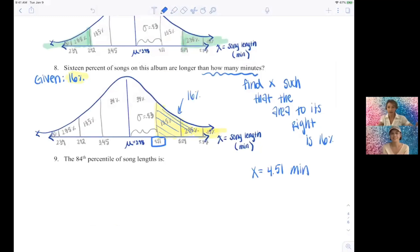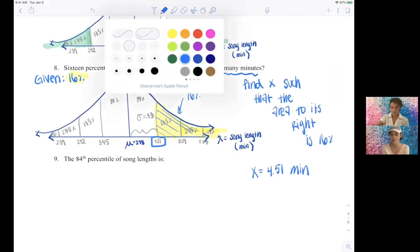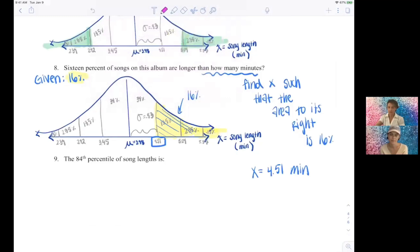Okay, so the 84th percentile means I want to know what's the boundary such that 84 of the data is to the left. Okay, so we start in from the left this time. Yeah, in fact, we could actually probably just build on our graph above.